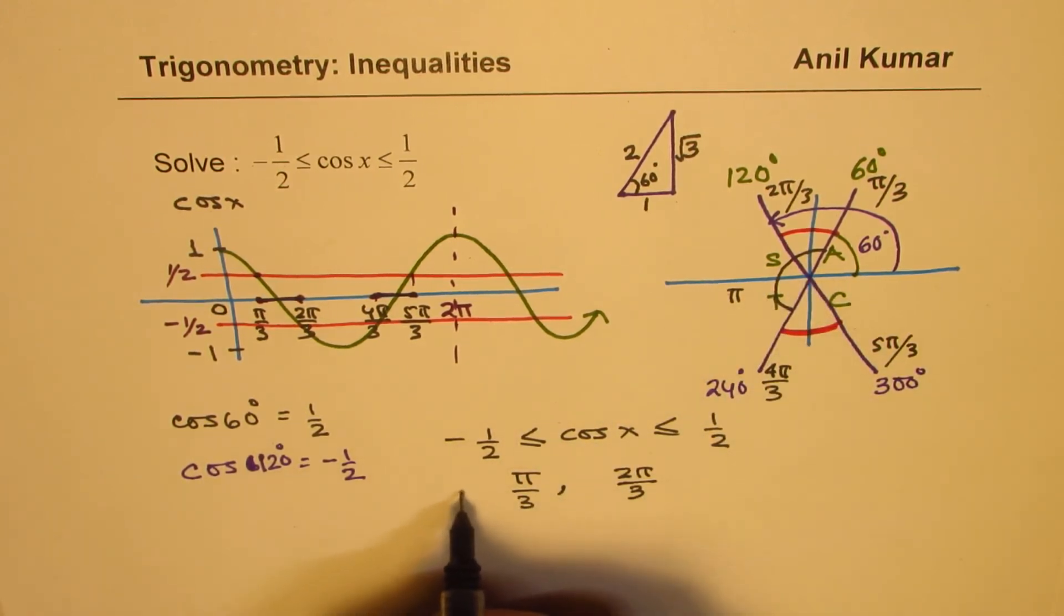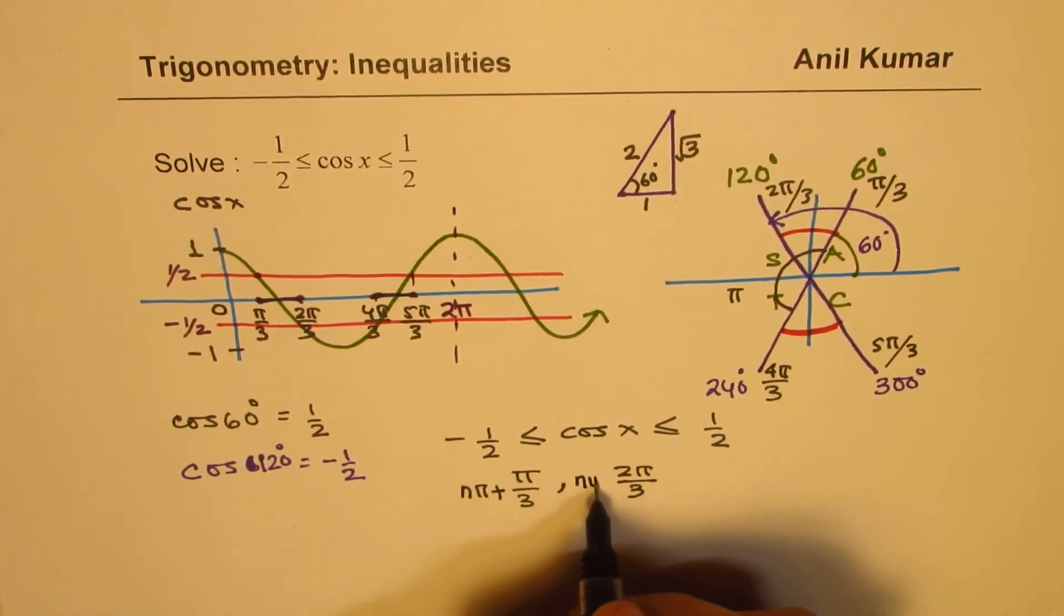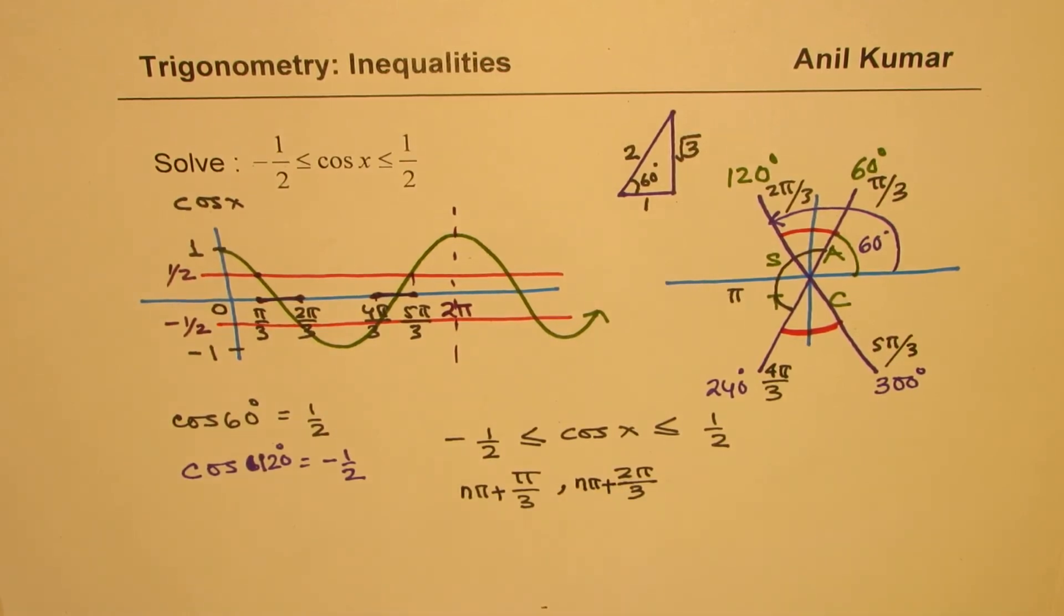Then again, between 4π to 5π/3. So it repeats after every π. So we could write this as nπ. Do you understand? nπ plus this or nπ plus this. That becomes our general solution.